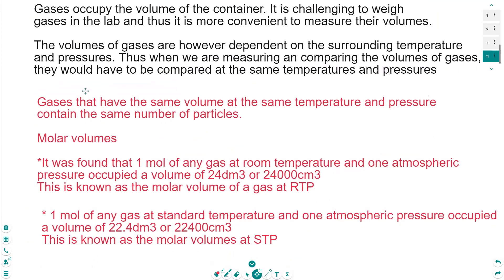Gases that have the same volume at the same temperature and pressure contain the same number of particles. So we have molar volumes, which tells us what volume one mole of a gas would occupy. It was found that one mole of any gas at room temperature and one atmospheric pressure occupied a volume of 24 dm³ or 24,000 cm³, and that is known as the molar volume of a gas at RTP.